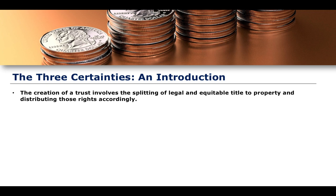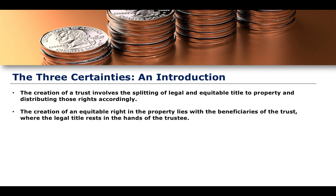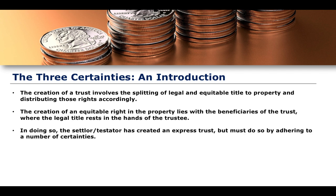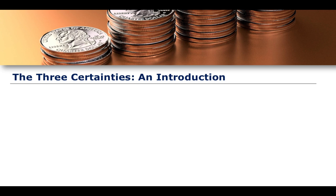You have to make sure that legal title is properly transferred, which is something we'll get to in the fourth topic covering the constitution of a trust. But we also have to think about the formalities required for the creation of a trust — the three certainties. In the creation of an equitable right in property, the equitable rights exist with the beneficiaries and the legal rights with the trustee. What the settlor or testator has done in an express trust is expressly created an instrument which exists in the nature of a trust, and they must do so by adhering to a number of certainties.